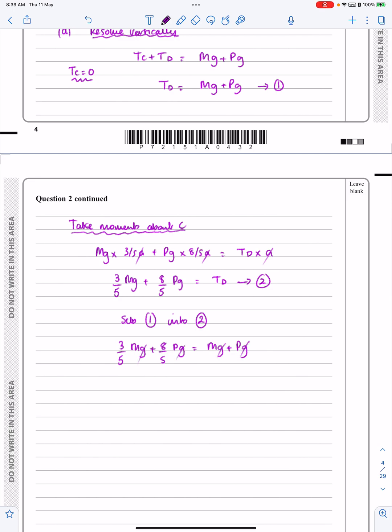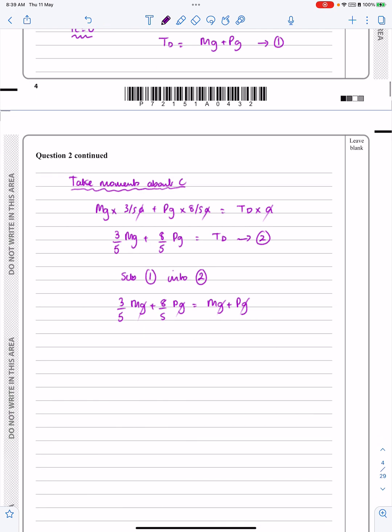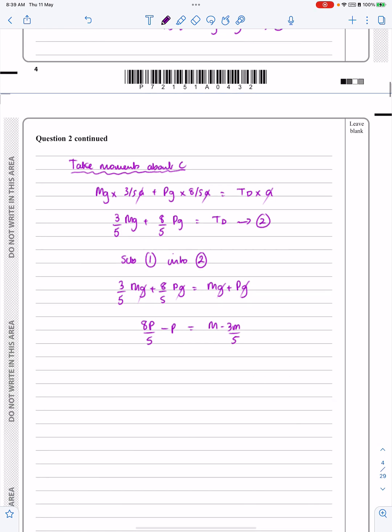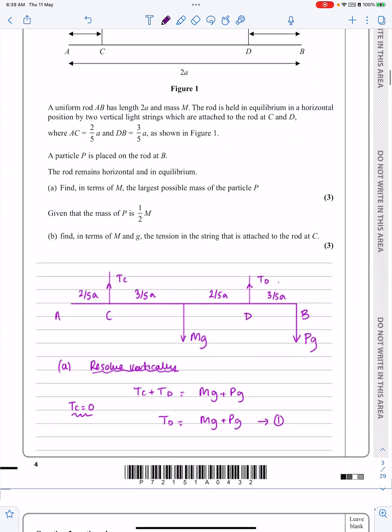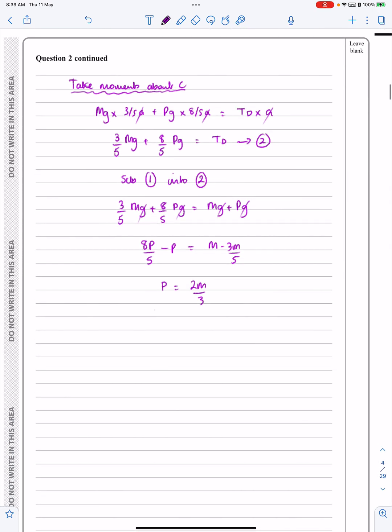So here I think I've got 3 fifths Mg plus 8 fifths Pg is equal to Mg plus Pg. And again, I'm always looking to cancel M's and A's in these sorts of questions if I can. So it doesn't surprise me to be able to do that. This is now relatively straightforward to just rearrange it all. I've got 8p over 5. Let's get the P's all onto that side, minus P. And I've got M minus 3M over 5 on that side. I'll leave you to work that out, but P works out to be equal to 2M over 3. And it's P that we were trying to find, yeah, the largest possible value of P. So P, in that case, works out to be equal to 2M over 3.